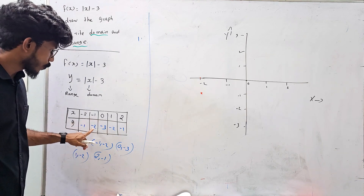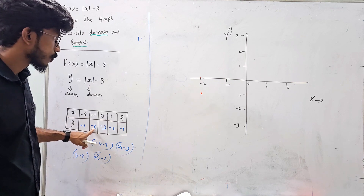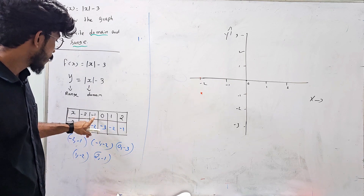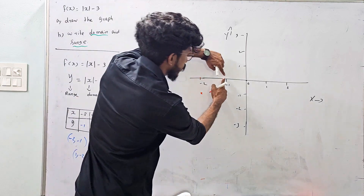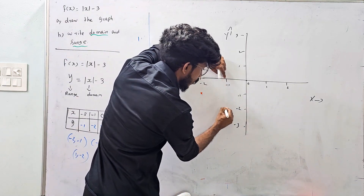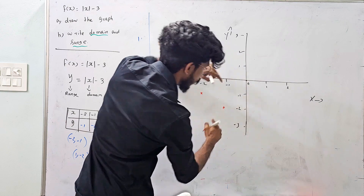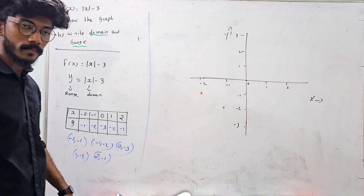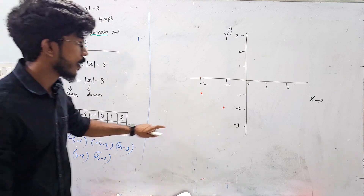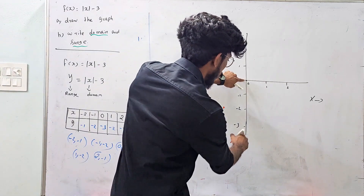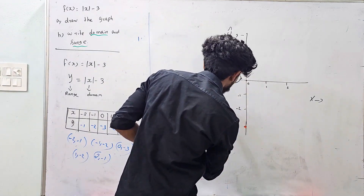Next point: x = -1, y = -2. Mark that point. Then x = 0, y = -3. Mark that point.